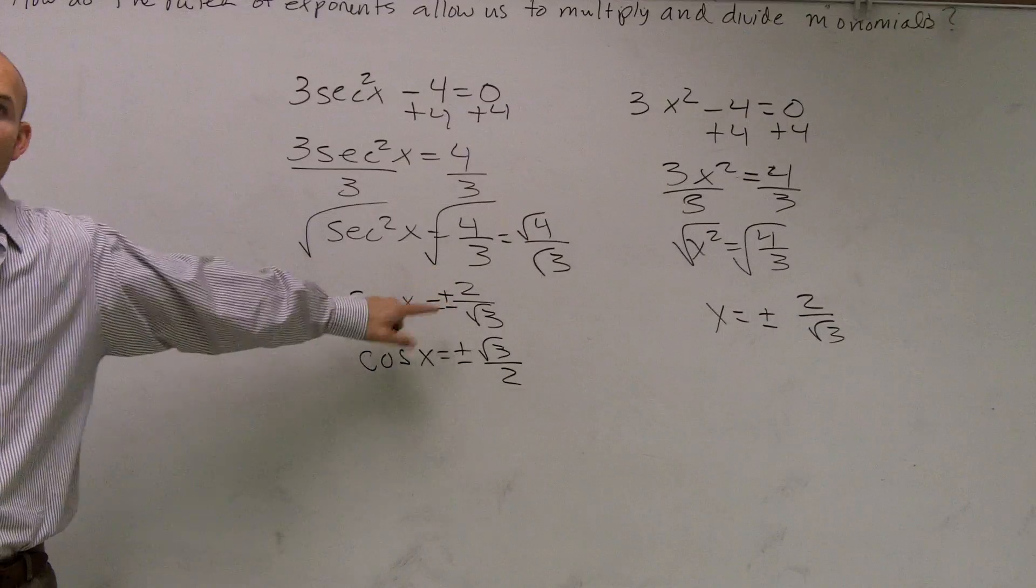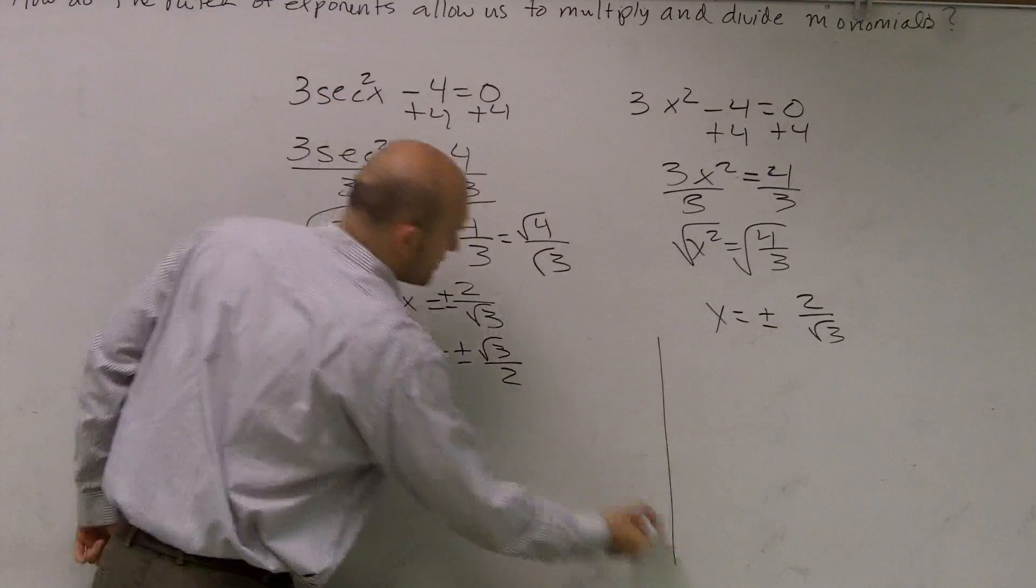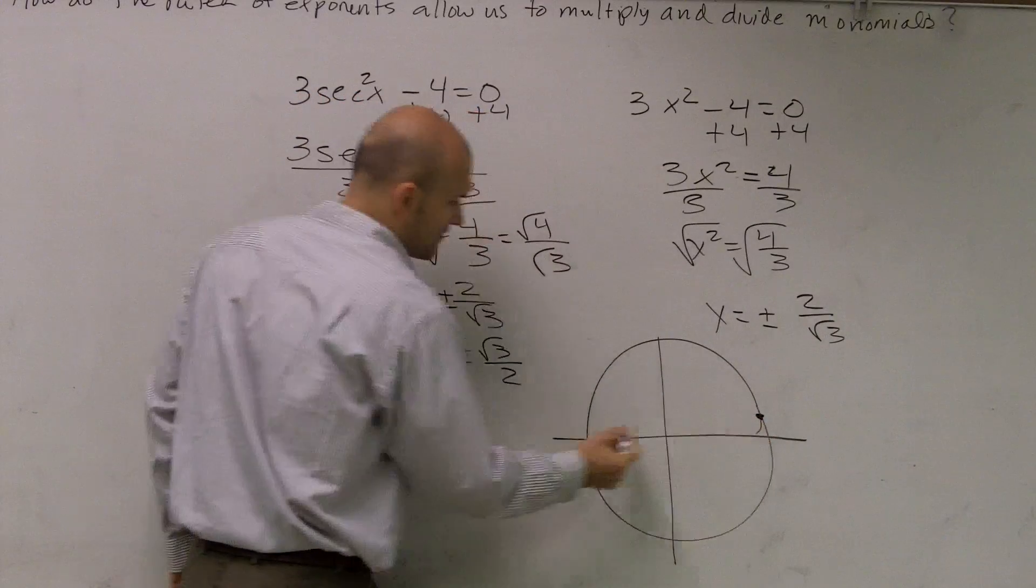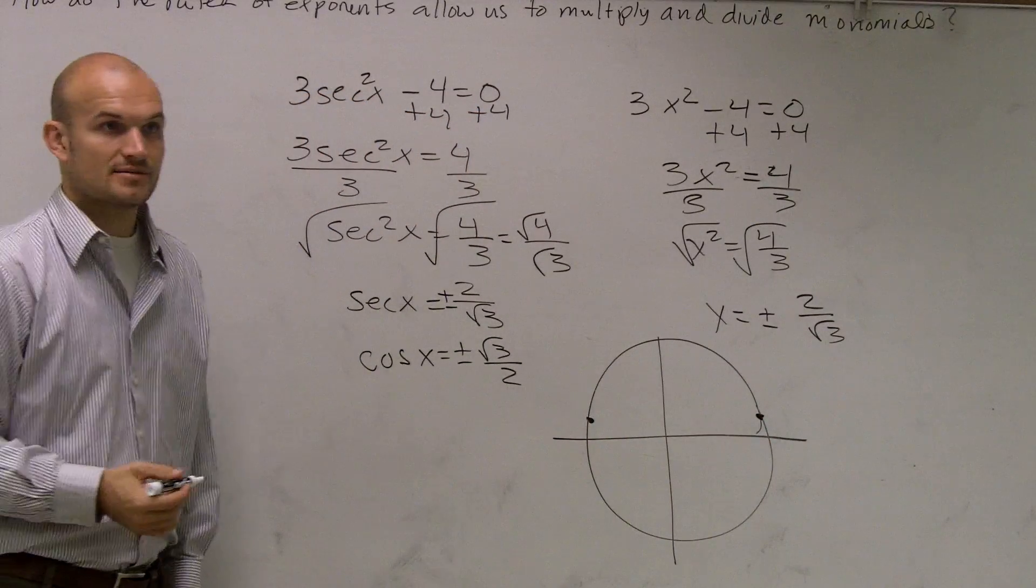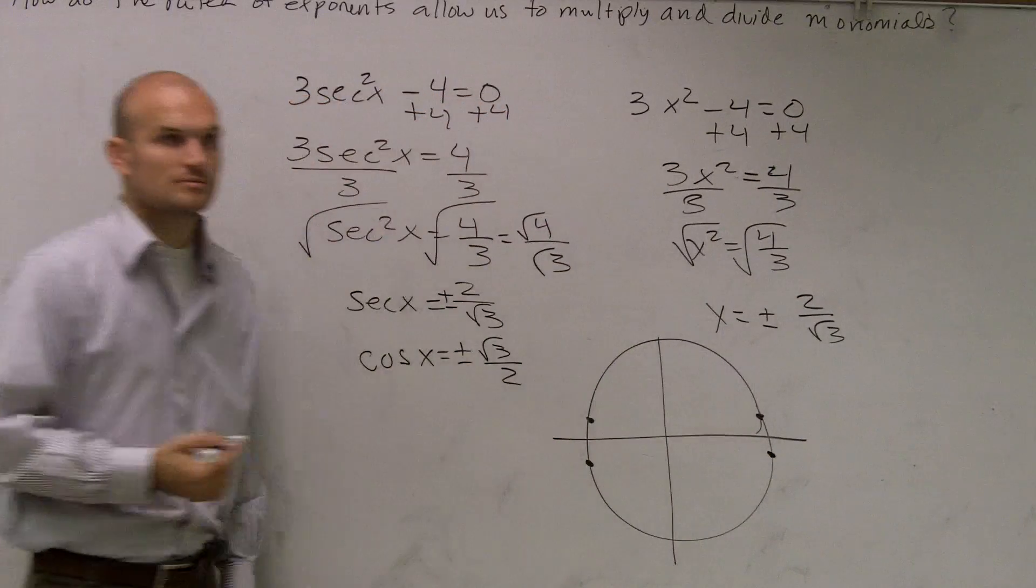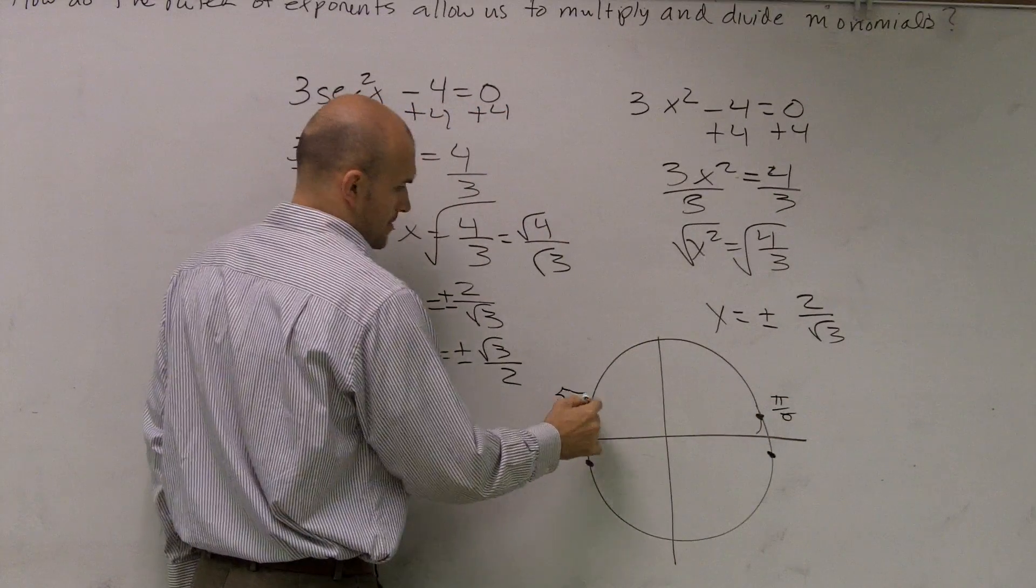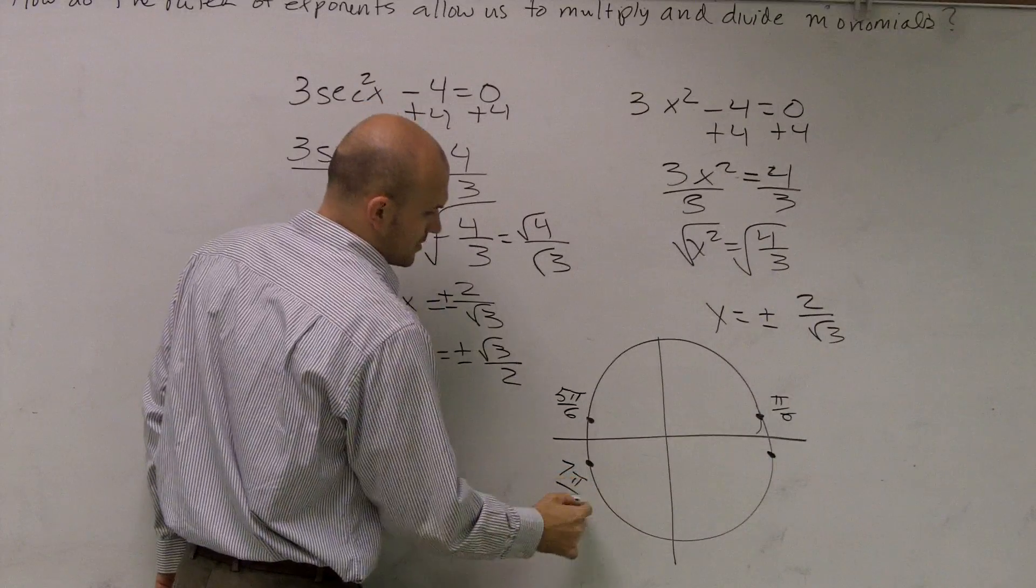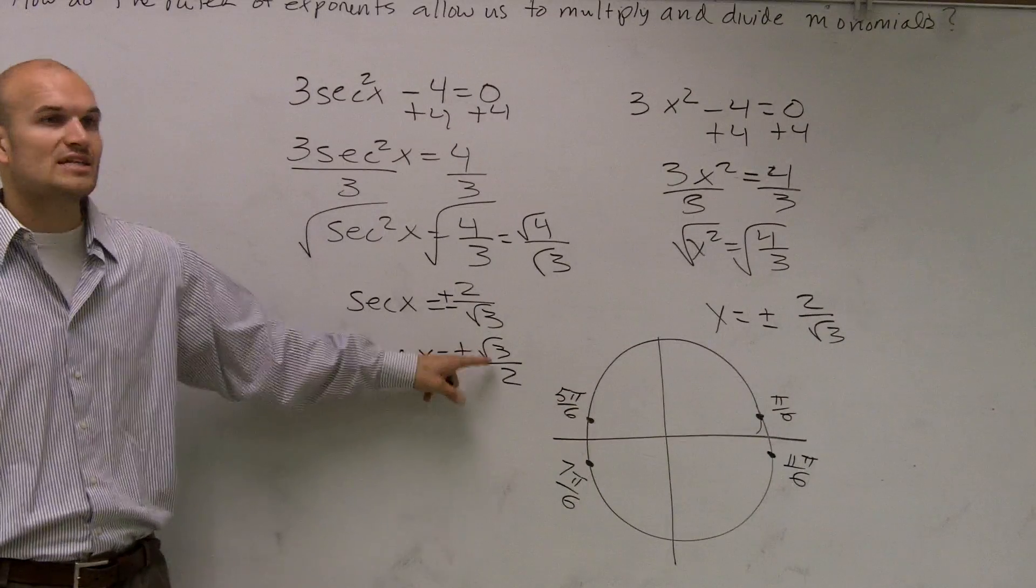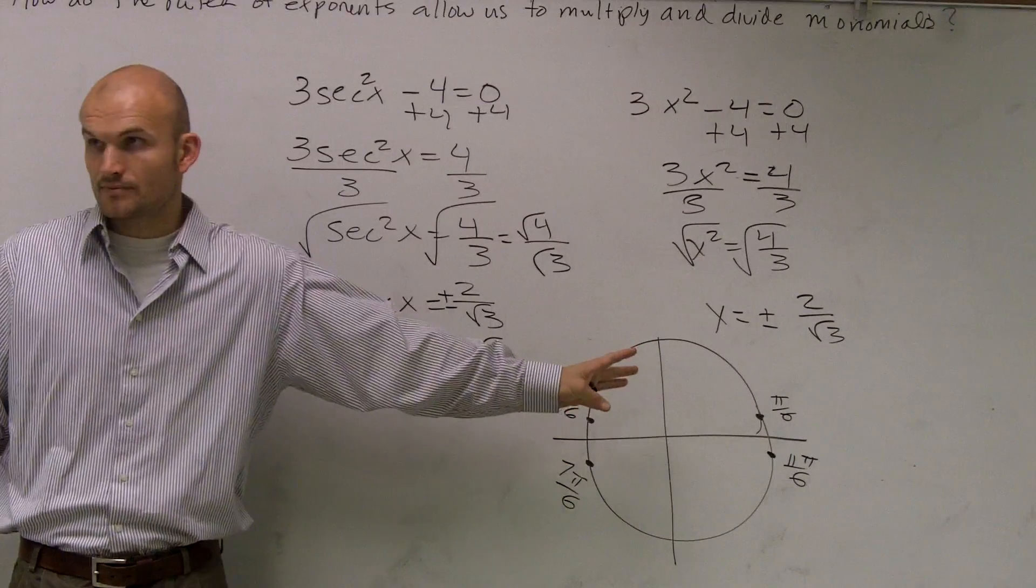Now I need to figure out when is all the points when cosine is really square root of 3 over 2. And there's going to be 4 coordinates, right? So you have pi over 6, 5 pi over 6, 7 pi over 6, right? And 11 pi over 6. So go ahead and look at your unit circles. And you'll notice that the cosine value is either plus or minus radical 3 over 2 for those four points, correct?